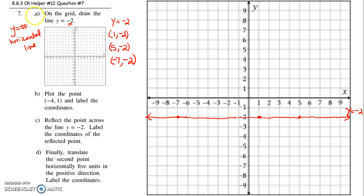If you had x equals some number, that's when you're going to get a vertical line, just so you're aware. All right. So I've done step A. Now they want me to plot the point negative 4, 1, and label the coordinates. So I start at the origin, I move 4 left and 1 up. And they want you to label it with the coordinates. That means plot the point and do negative 4, 1. There you go.